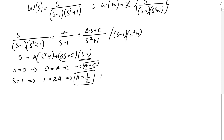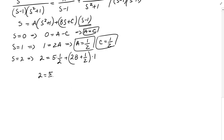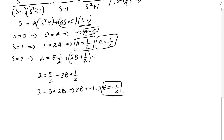Now we just need to find B. Setting s equals 2: 2 equals 5A plus 2B plus C times 1, which is 5 times one half plus 2B plus one half, so 2 equals 3 plus 2B, giving 2B equals negative 1, so B equals negative one half. Now we have all three values: A equals one half, B equals negative one half, C equals one half.